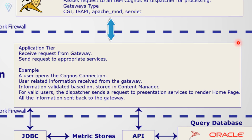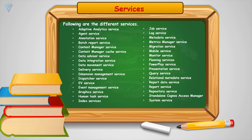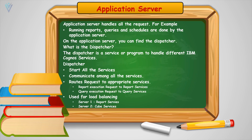On the application server, the application server is going to process this information. For different types of requests we have different services. Application server handles all types of requests — for example, running a report, running queries, or scheduling reports. On the application server we can find the dispatcher. Dispatcher is a service or a program to handle different IBM Cognos services.